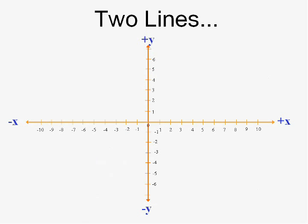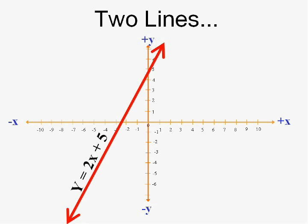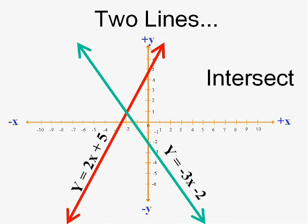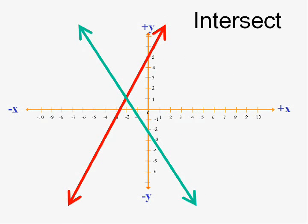One other possibility is we graph this line and this line and they intersect. That's when it's going to be useful because if they intersect then there's going to be a point that's on both lines, the place where they intersect. That point, that pair is going to fit into both equations.